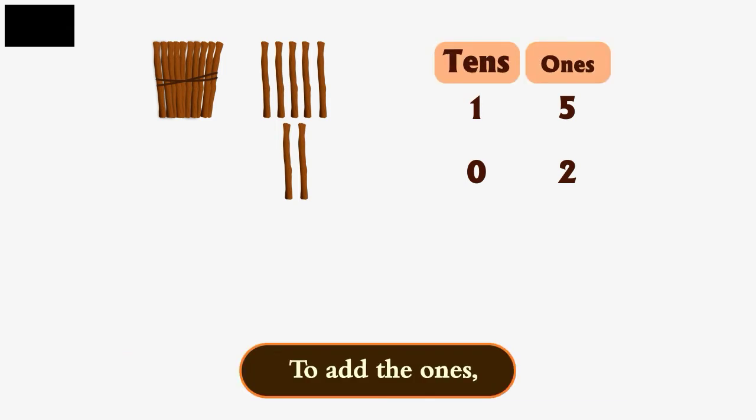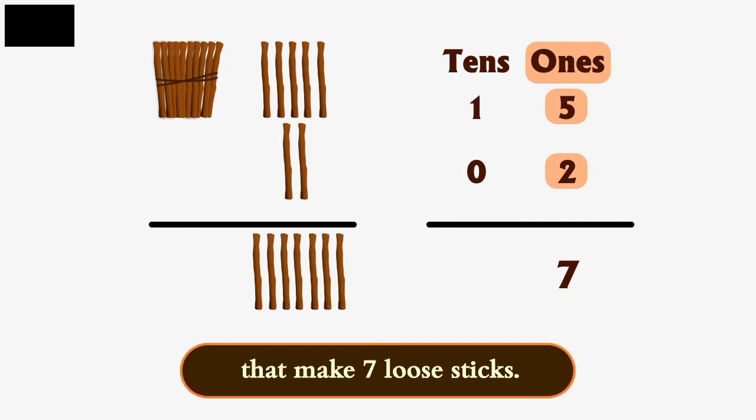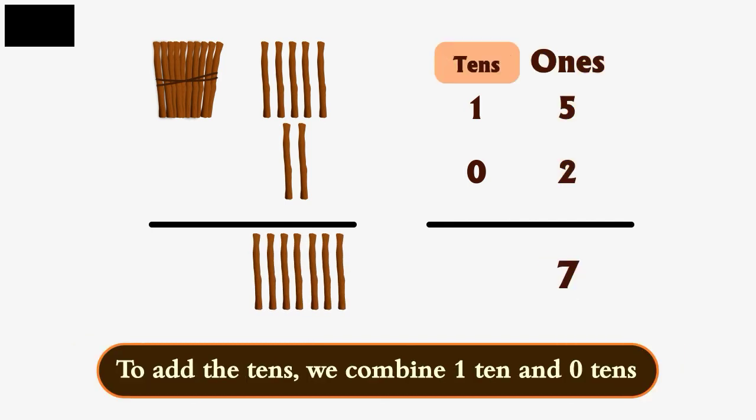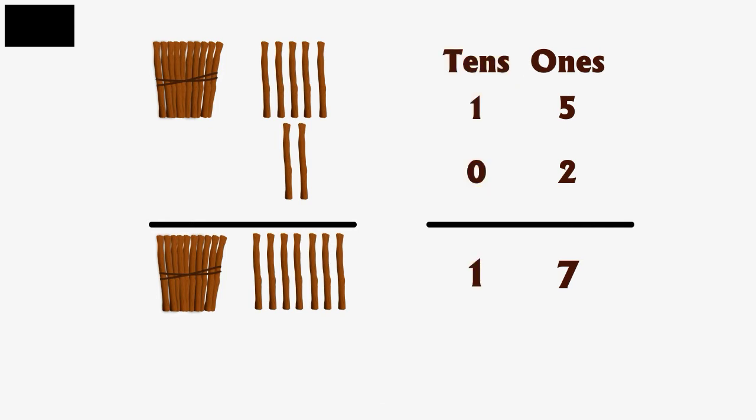To add the ones, we combine 5 loose sticks and 2 loose sticks together that make 7 loose sticks. To add the tens, we combine 1 ten and 0 tens together that make 1 ten.